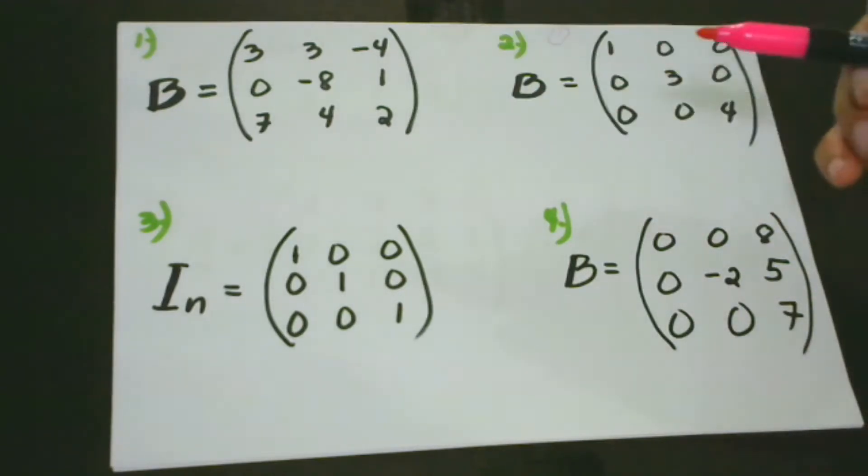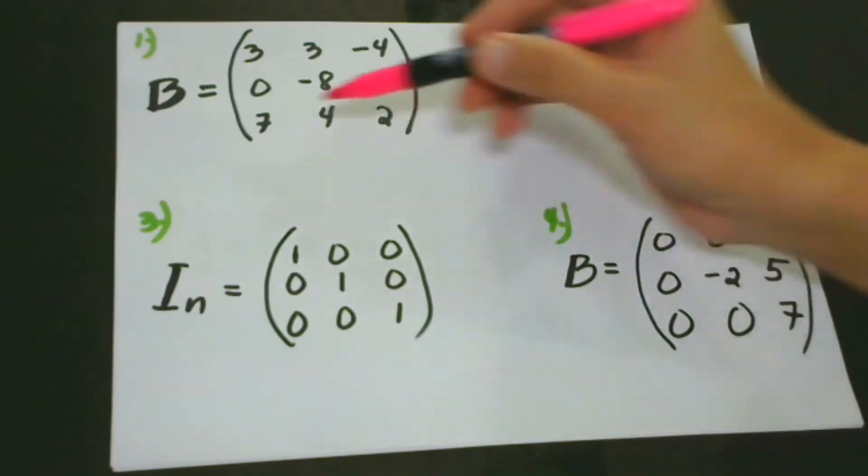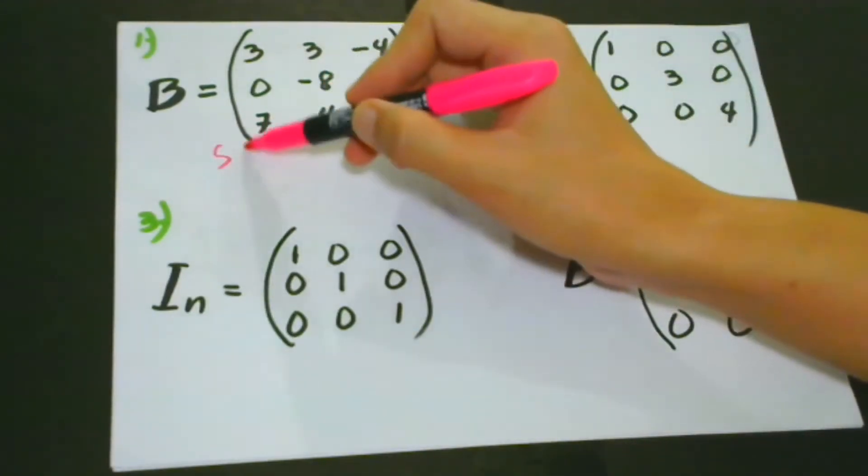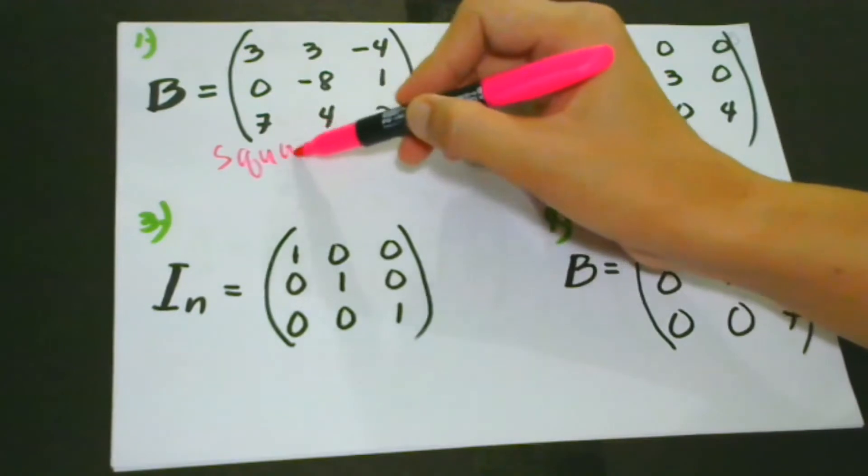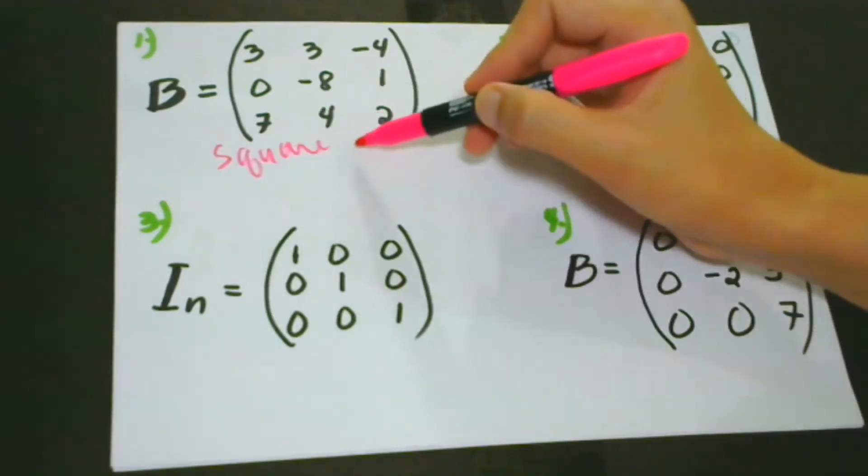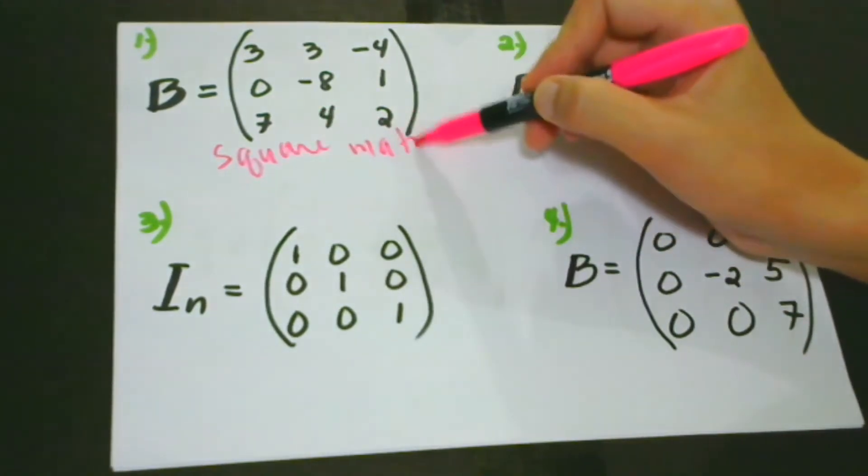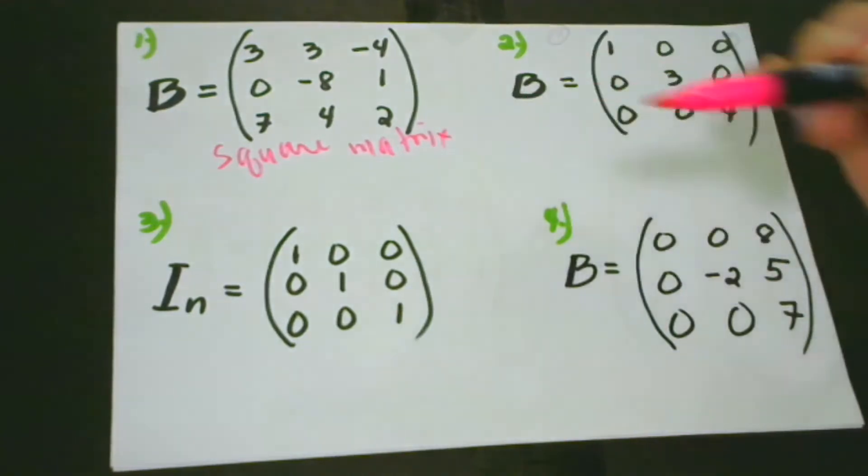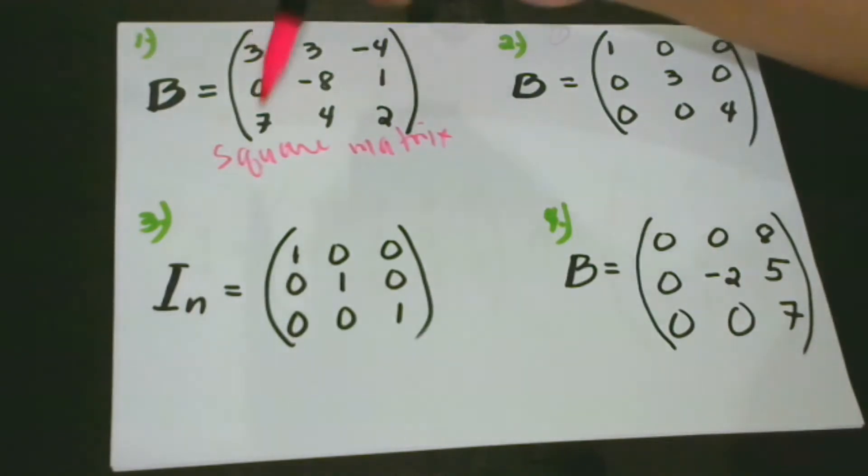The first one is what we call the square matrix. This is an example of a square matrix. This is a square matrix because the number of rows are equal to the number of columns. How many rows do we have? Let's count 1, 2, 3.